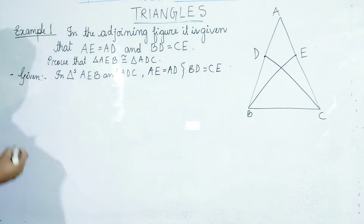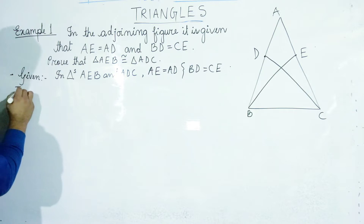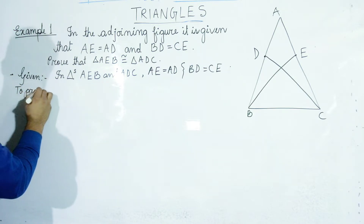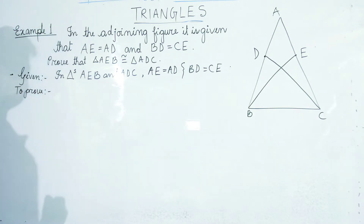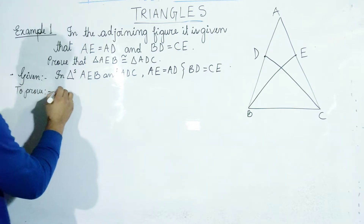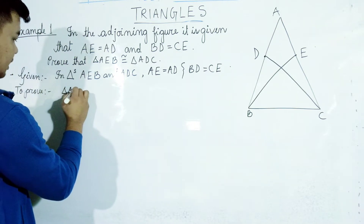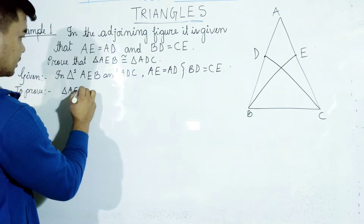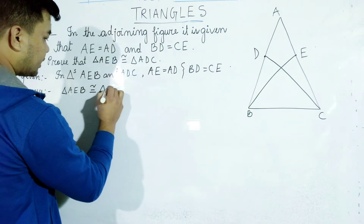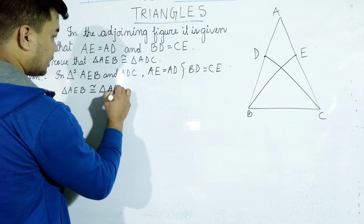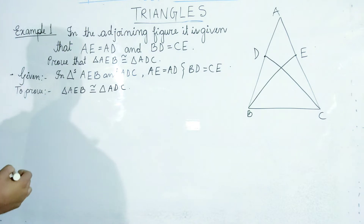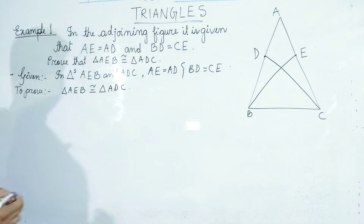To prove, what is the same? To prove what is the same: triangle AEB is congruent to triangle ADC. We have a triangle congruent to the same.